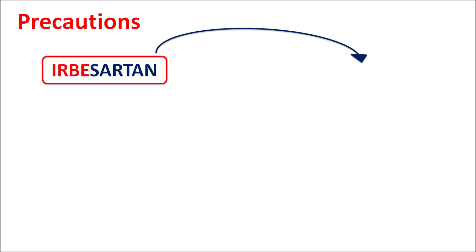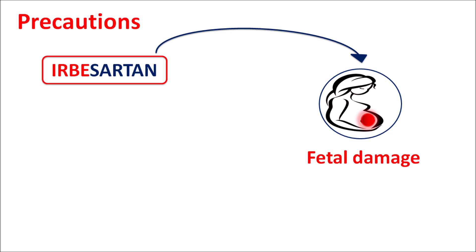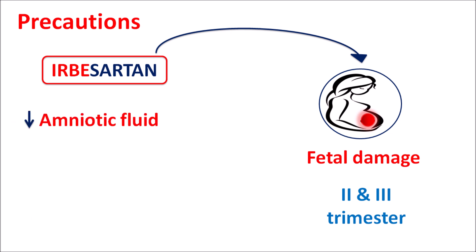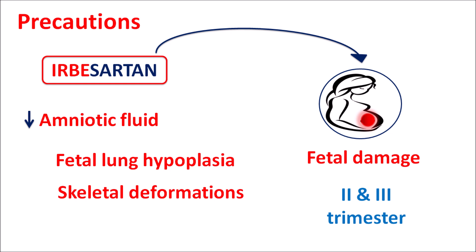Similarly, Irbesartan can increase fetal toxicity, producing fetal damage particularly observed in the second and third trimesters. This drug is contraindicated in pregnant women. When given during pregnancy, it can reduce amniotic fluid, increasing fetal damage, and can produce fetal lung hypoplasia — reducing fetal lung growth — and may even cause skeletal deformations within the fetus.